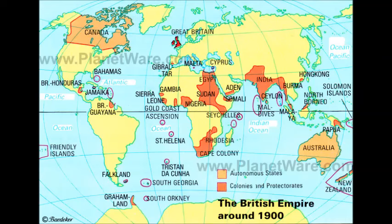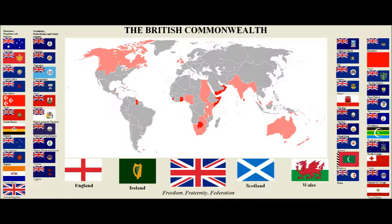The Commonwealth nations share some common culture. They are all English-speaking. The countries that had many British immigrants, like Canada, Australia and New Zealand, now have English as a first language. Others, like India and South Africa, have English as an official second language.